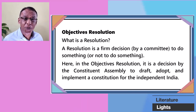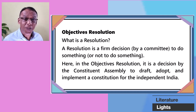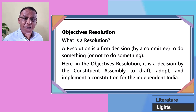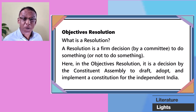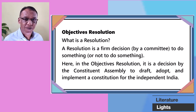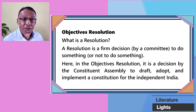Now, friends, take a look at the Objectives Resolution. What is a resolution? A resolution is a firm decision taken by a committee to do something or even not to do something. For example, the Kerala Assembly passes a resolution asking the central government to withdraw the price hike of cooking gas. Now, in the Objectives Resolution, it is a decision by the Constituent Assembly to draft, write, adopt, and implement a constitution for independent India.